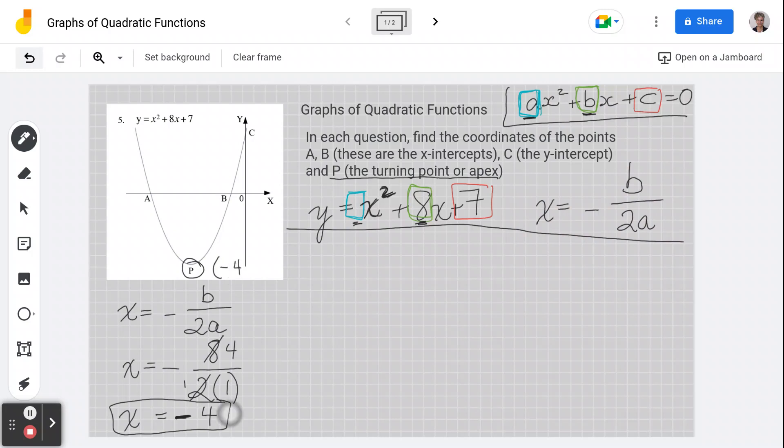Okay, now we're going to take this and pop it into our equation, because we want to find out what y is. So y equals x squared plus 8x plus 7. That's our formula. So y equals, I'm going to put in negative 4 squared plus 8 times negative 4 plus 7.